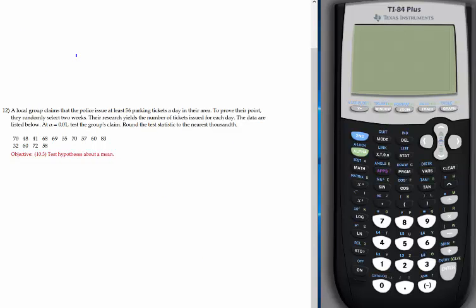Exercise 12. A local group claims that the police issue at least 56 parking tickets a day in their area. To prove their point, they randomly select 2 weeks. Their research yields the number of tickets issued for each day. The data are listed below. At alpha equal 1%, test the group's claim. Let's write the null and alternative. It's about the mean. At least, the sign for at least is greater than or equal. Anything with the equal sign goes to the null hypothesis, so H0: mu equals 56. The alternative is mu less than 56. This is where the claim is.